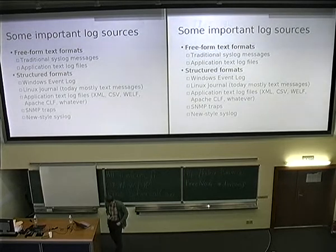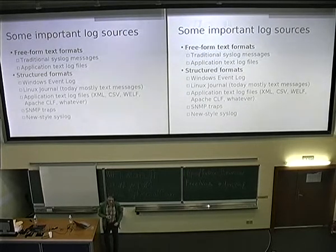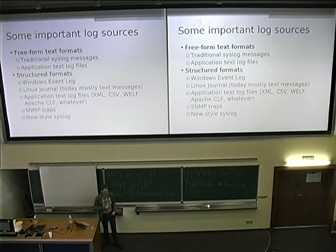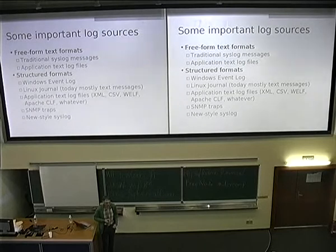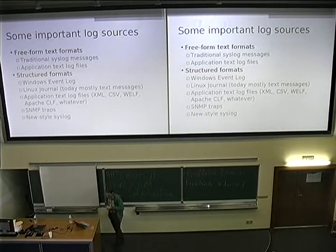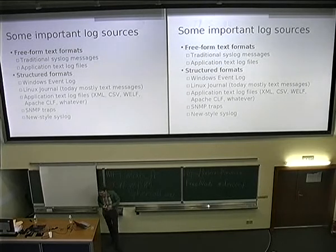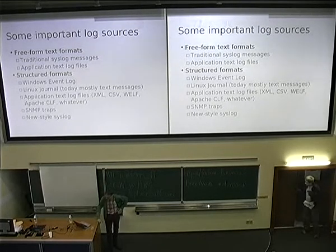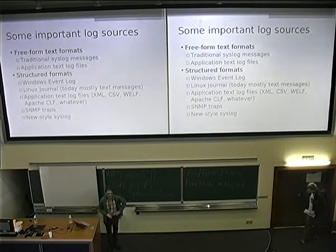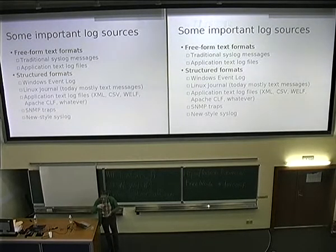Then we have structured formats. Foremost, very important, we have the Windows event log, which has something very similar to the journal for many years, with very well-defined structure — that's a good thing. It's very bloated — that's a bad thing. We have the Linux journal, which promises some structure and if used properly can provide it, but currently mostly carries traditional Syslog text messages, so it's a transition phase. We also have application text log files that are structured — some in XML, a lot in CSV, formats like Valve, Apache CLF, Apache structured. Then SNMP traps and the RFC-style Syslog, which also provides some structure.